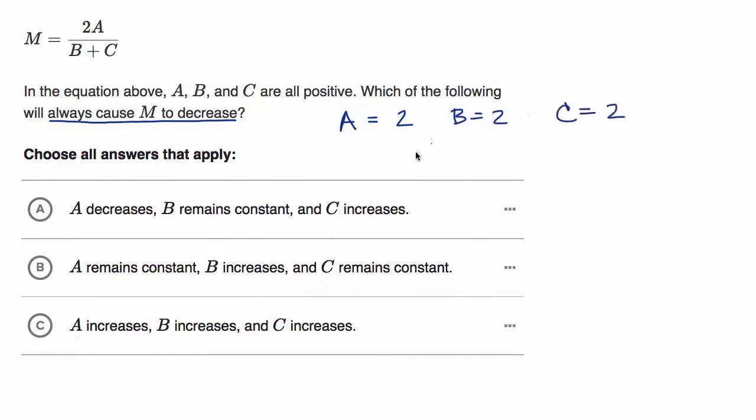If this is the case, M would be equal to two times two over two plus two, which equals four over four, which is equal to one. So that's where we're starting from.